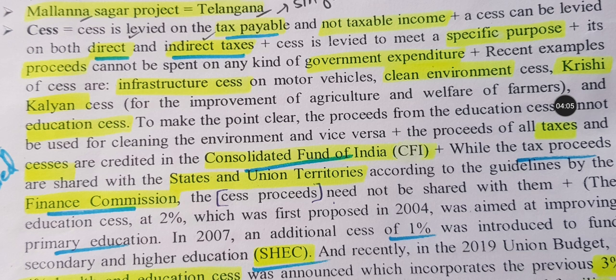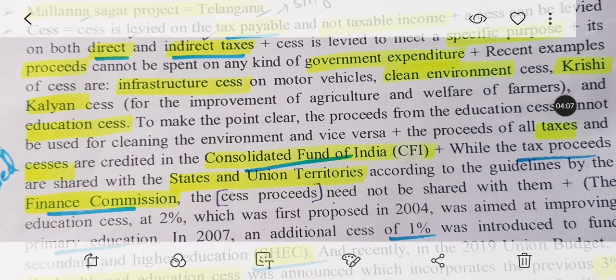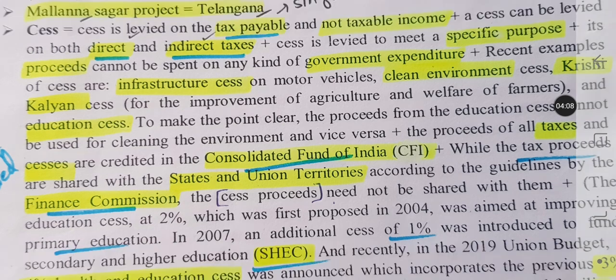The key distinction is that tax proceeds are shared with the states and union territories, but cess proceeds are not shared with states. The central government's tax revenue is shown in the revenue, and if it goes to the state it is shared. But cess is not the same — the central government does not share cess with states.